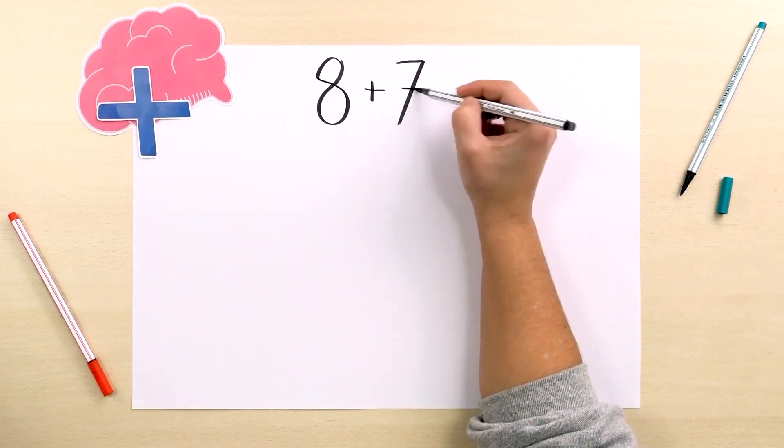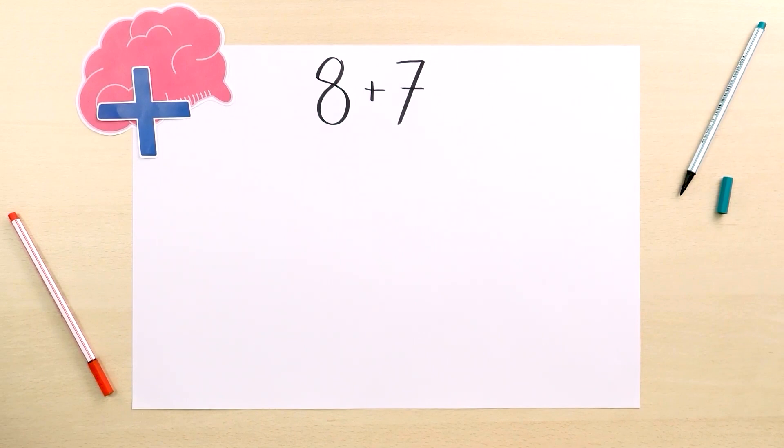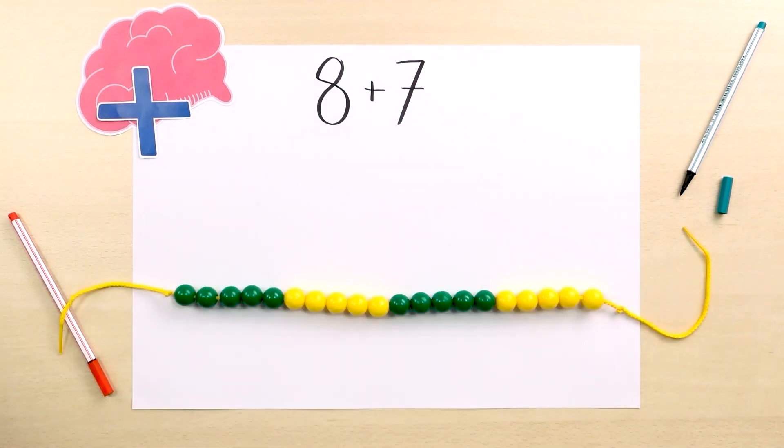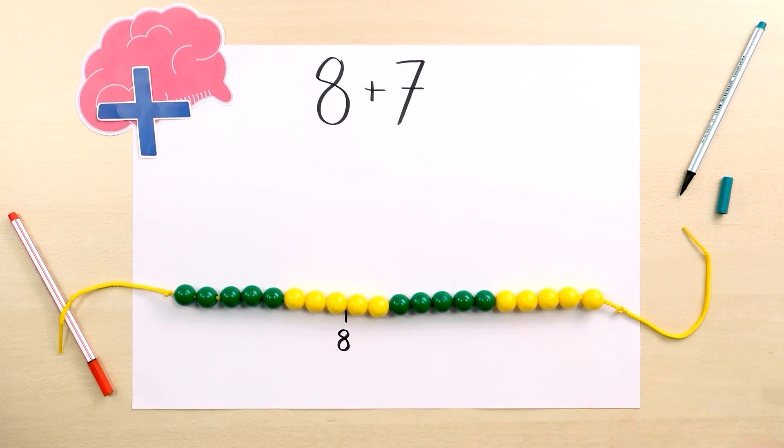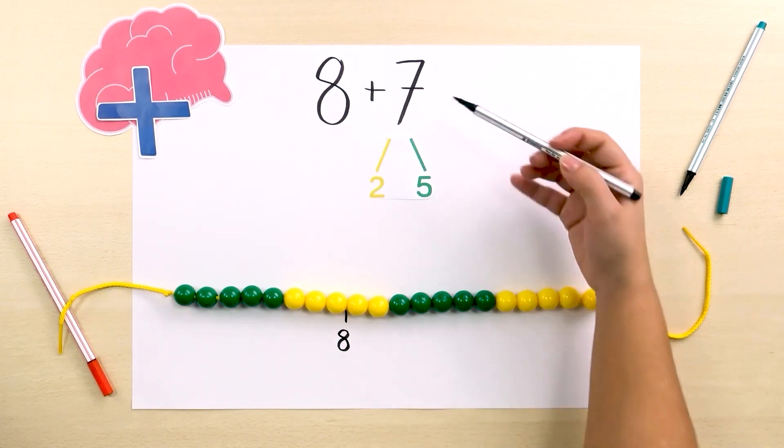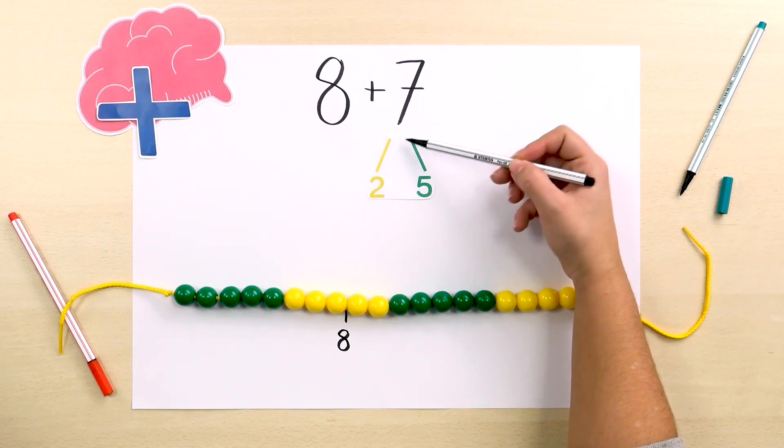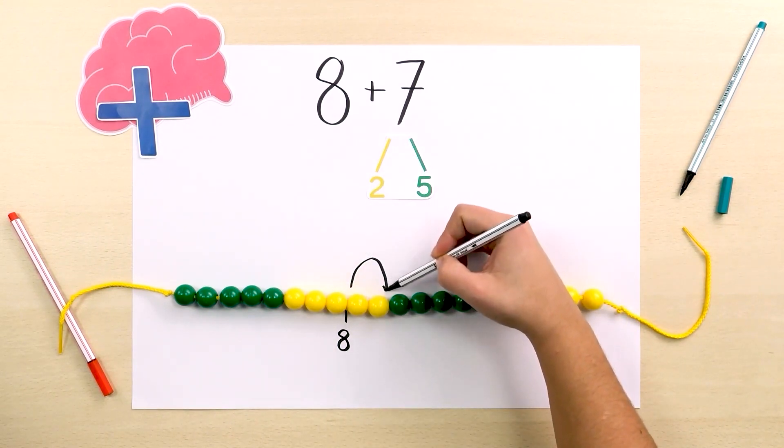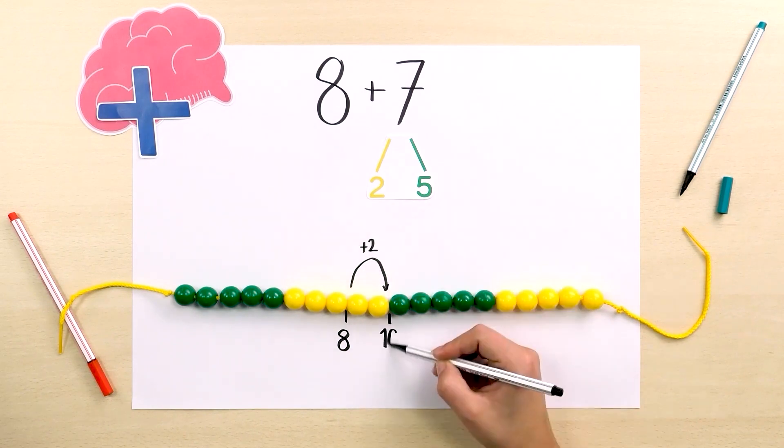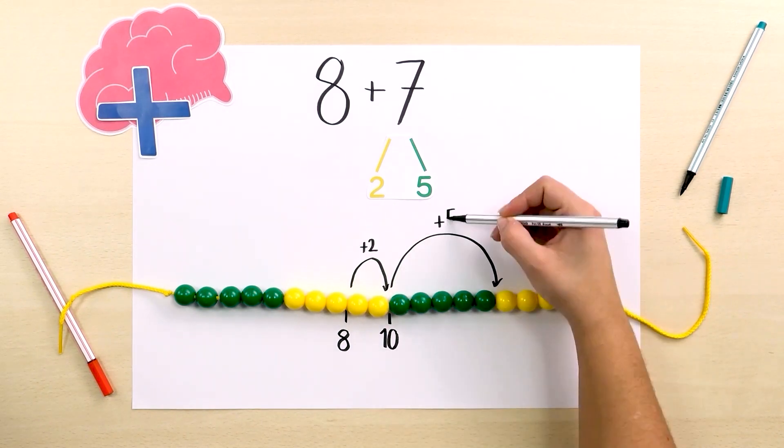Let's begin with the addition 8 plus 7. To solve this, we can use the 20 bead necklace. Let's go to number 8. To jump forward by 7, we can break it down into two easier jumps, guided by the colors. First we make a jump of 2 to get to 10, and then a jump of 5 to get to 15.